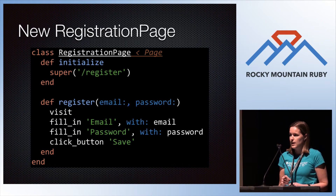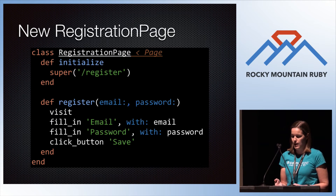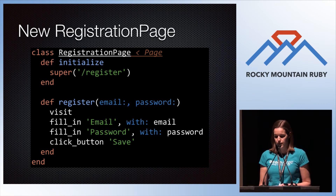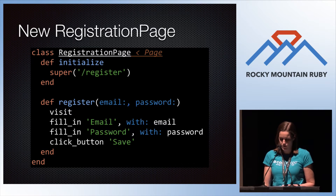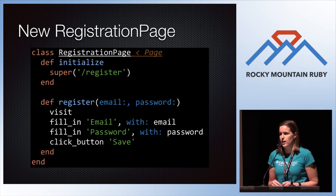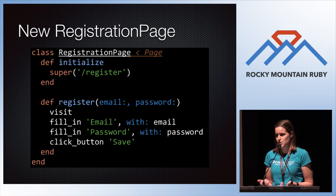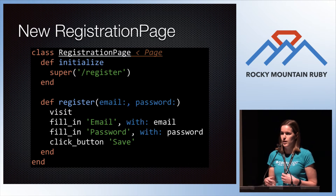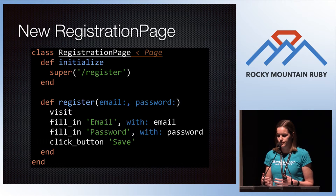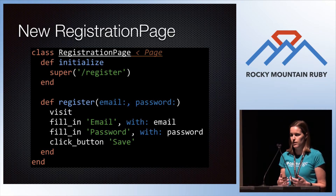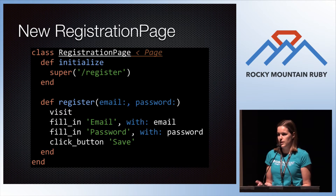Now that we've made the base page object, we can simplify the registration page to only include things specific to it — the URL and a register method, without all that extra Capybara stuff. Another way that might be preferable to inheritance would be using modules: a visitable module and an errorable module that you include on the page objects that use them. That way, if you have sections of pages that don't have a URL to visit, or pages that never have errors, you're not loading the page object with unnecessary stuff.